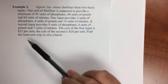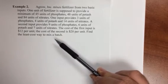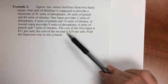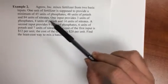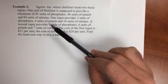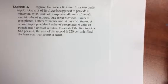and that's going to create a fertilizer. So our objective, as it says here, is find the least cost way to mix a batch. So we want to minimize our costs by choosing input one and input two, and then subject to the constraints that our fertilizer has to contain so many units of the different characteristics.